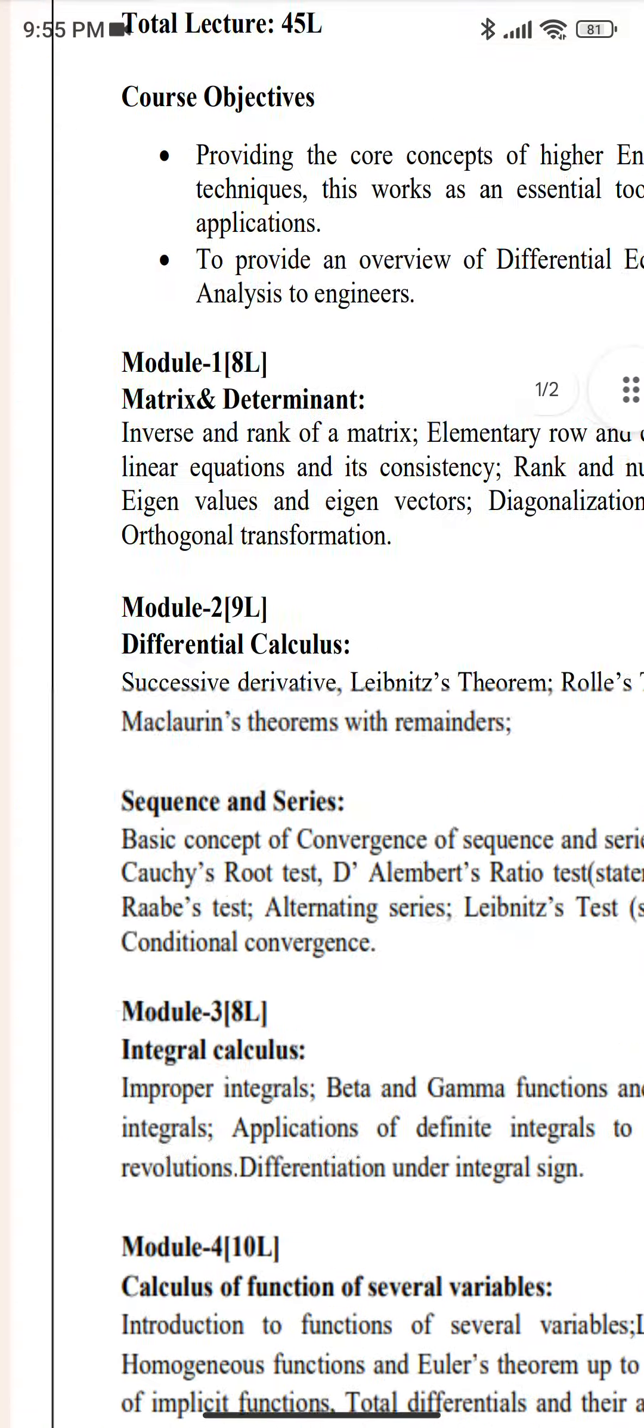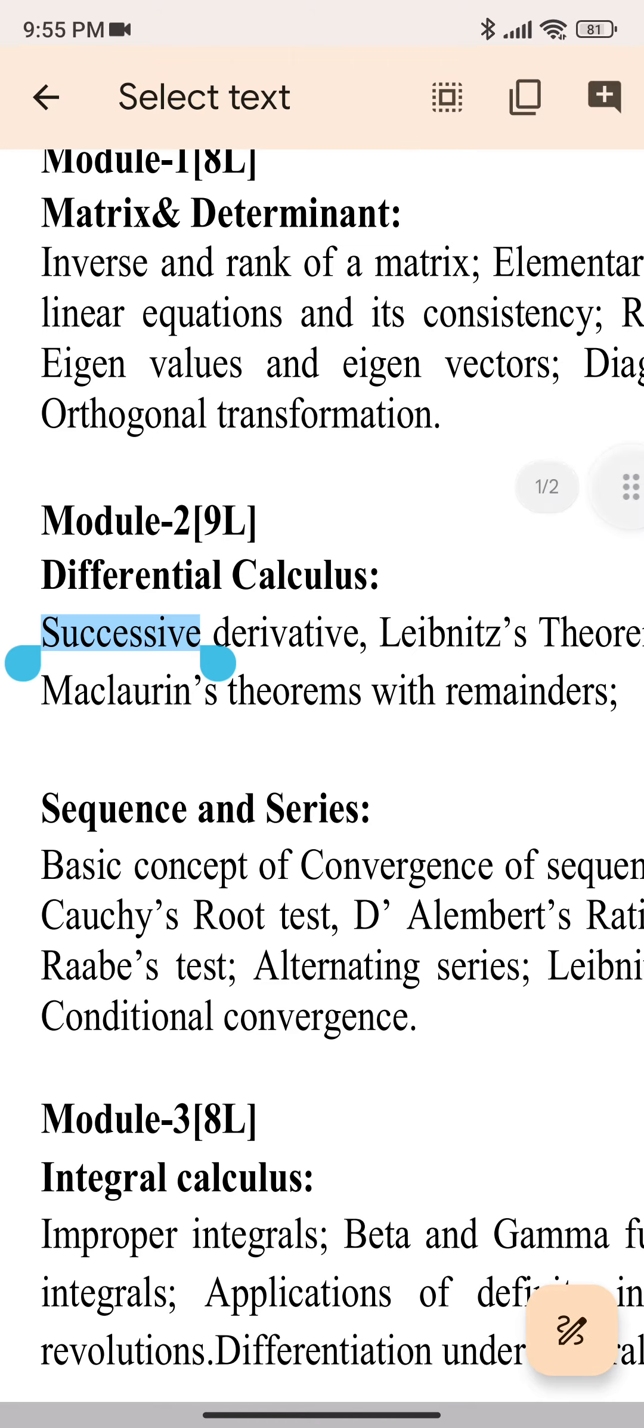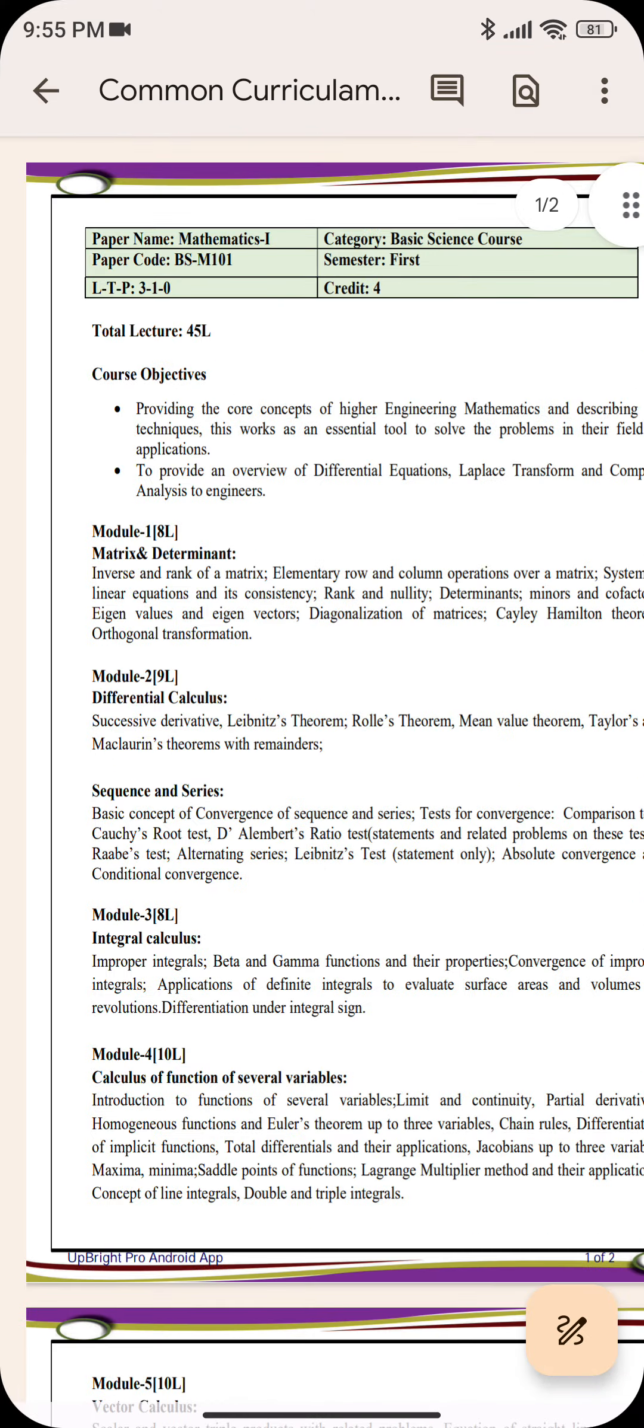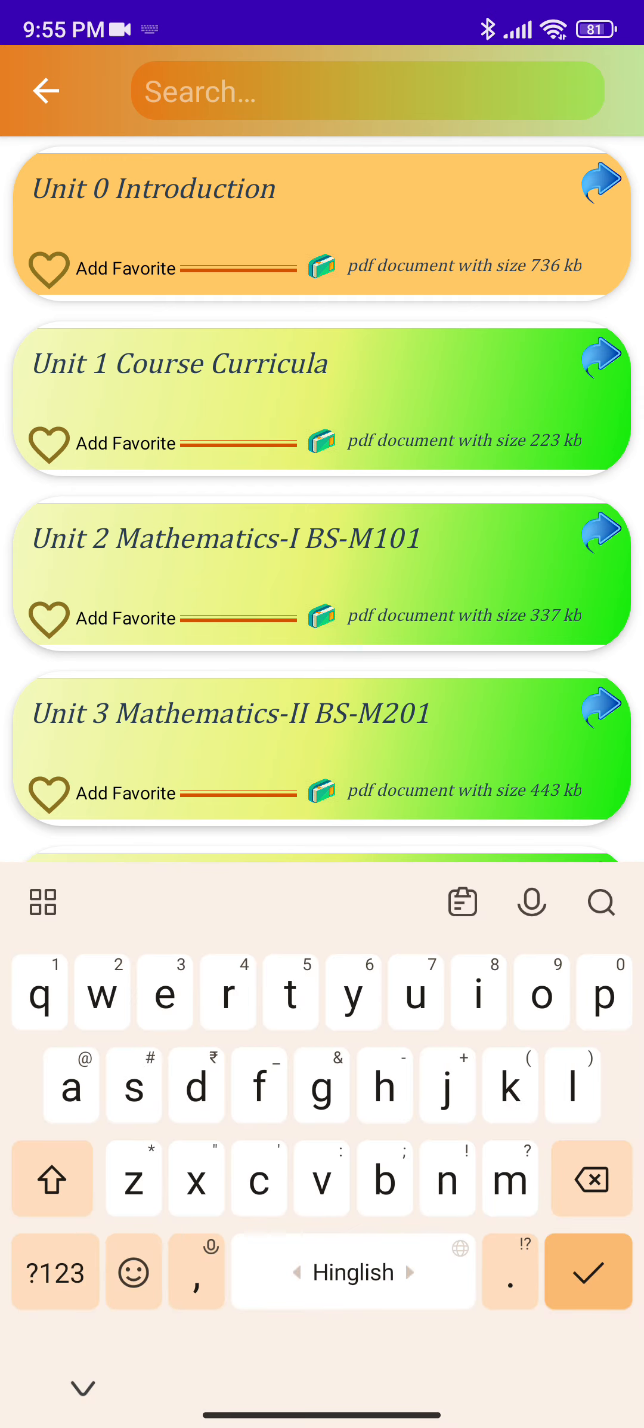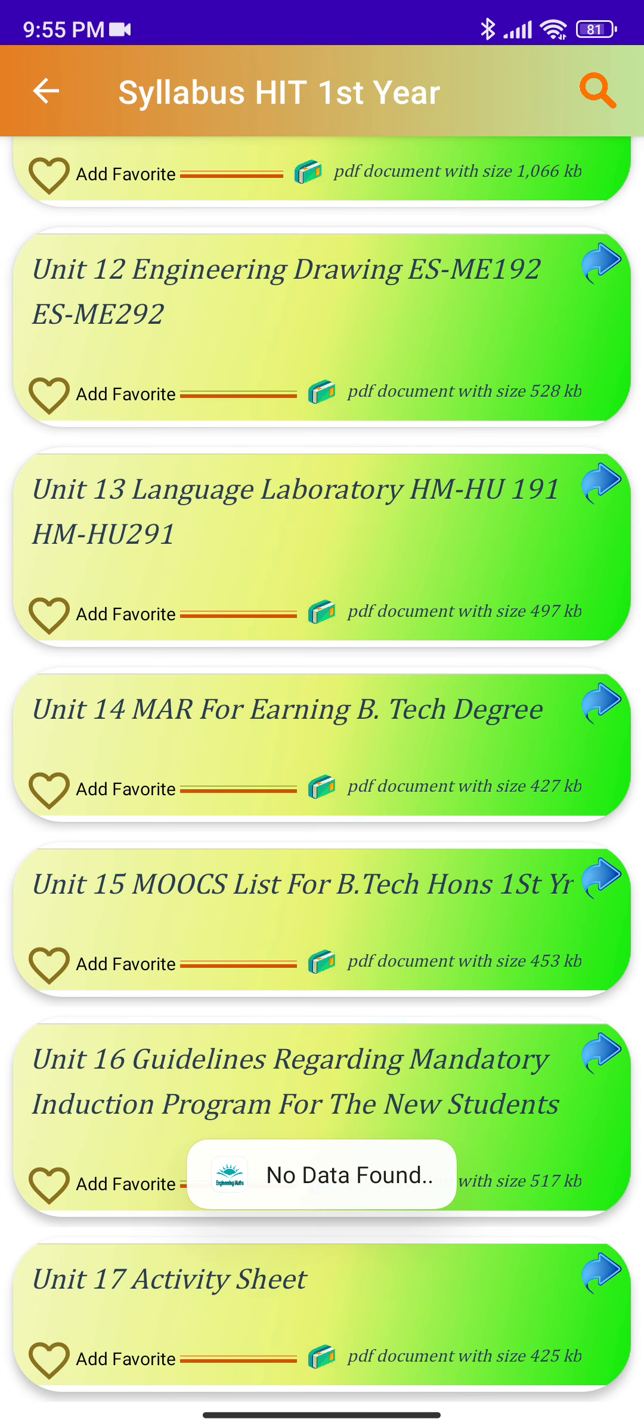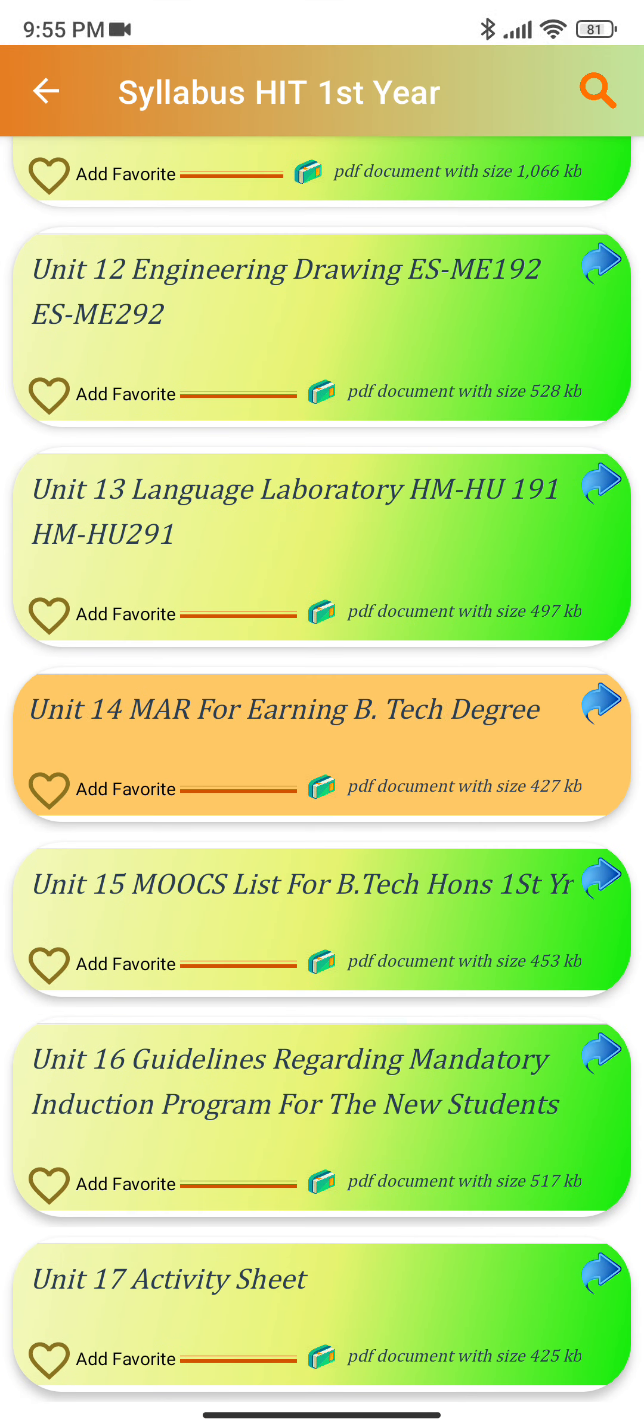This is the successive derivative which is Module 2. And if you find here, there are the MAR, MODUS, Chemistry. There are the Chemistry syllabus. There are the MODUS, MAR, this is the MAR.